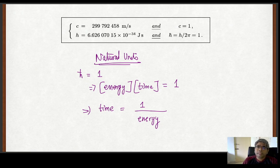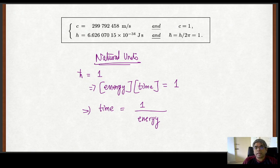When I say c = 1 and ℏ = 1, I mean the units corresponding to them are set equivalent to 1 — not just the numerical value but also the units. Setting ℏ = 1 means ℏ has units of energy × time, and setting it to 1 means time will from now on be measured in terms of inverse energy units — for example, eV⁻¹ or GeV⁻¹.